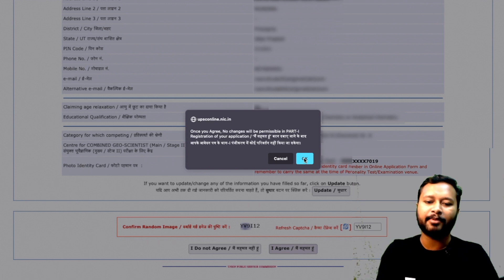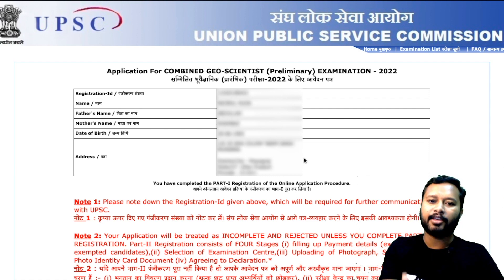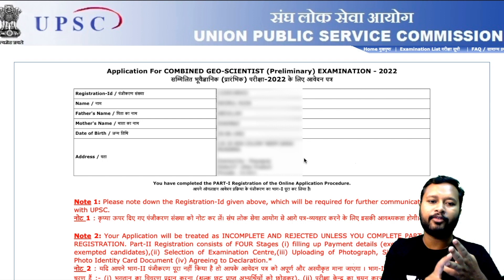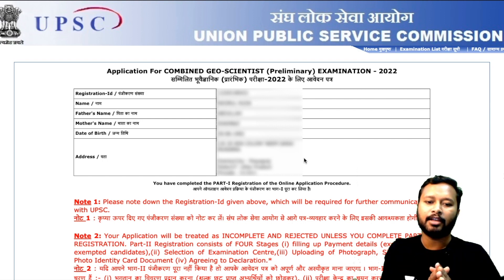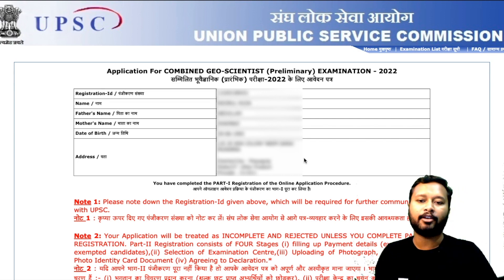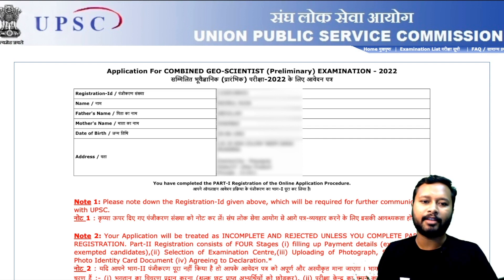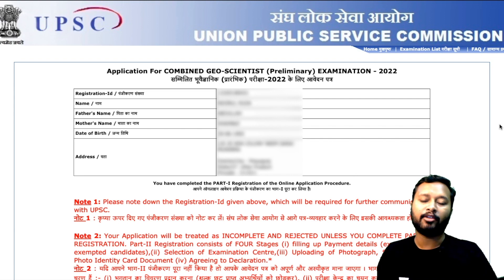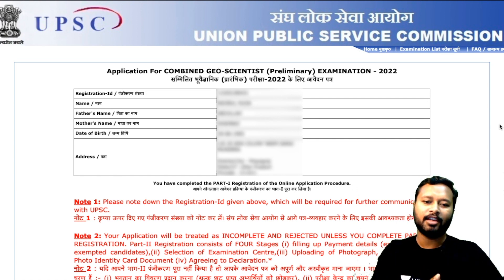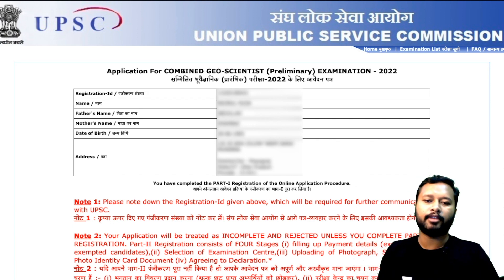You will be given your application details for the Combined Geoscientist Preliminary Exam — your registration ID, name, father's name, mother's name, date of birth, and address. Make sure you note down your registration ID. You can save this page as a PDF, take a screenshot, or take a photo of it on your smartphone. Part 1 registration is now complete; now you need to go to Part 2 registration.